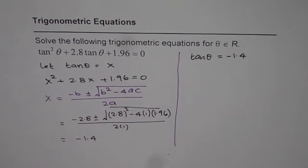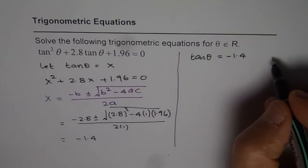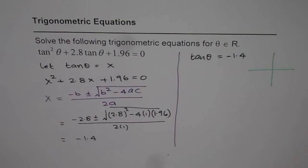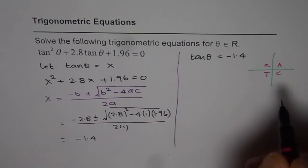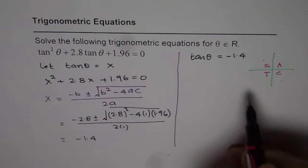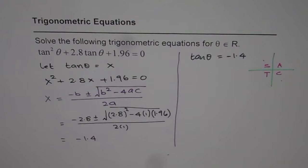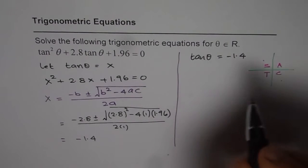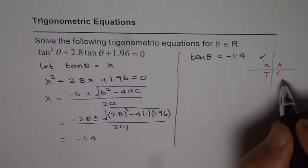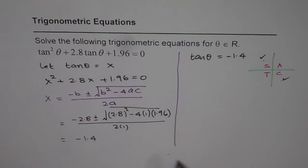Now the question is what angle theta will give us a value of minus 1.4? So what we can do is we can look into the CAST rule. In quadrant 2 and 4 tan theta will be negative, it is positive in 1 and 3. So that means we have a solution either in quadrant 2 or in quadrant 4.